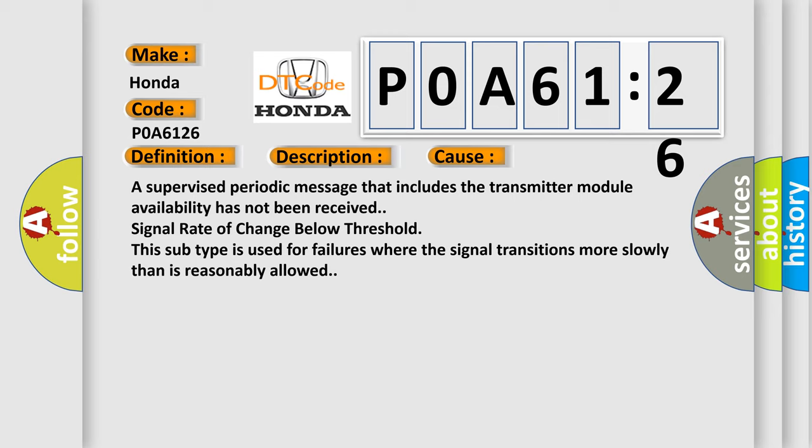A supervised periodic message that includes the transmitter module availability has not been received signal rate of change below threshold. This subtype is used for failures where the signal transitions more slowly than is reasonably allowed.